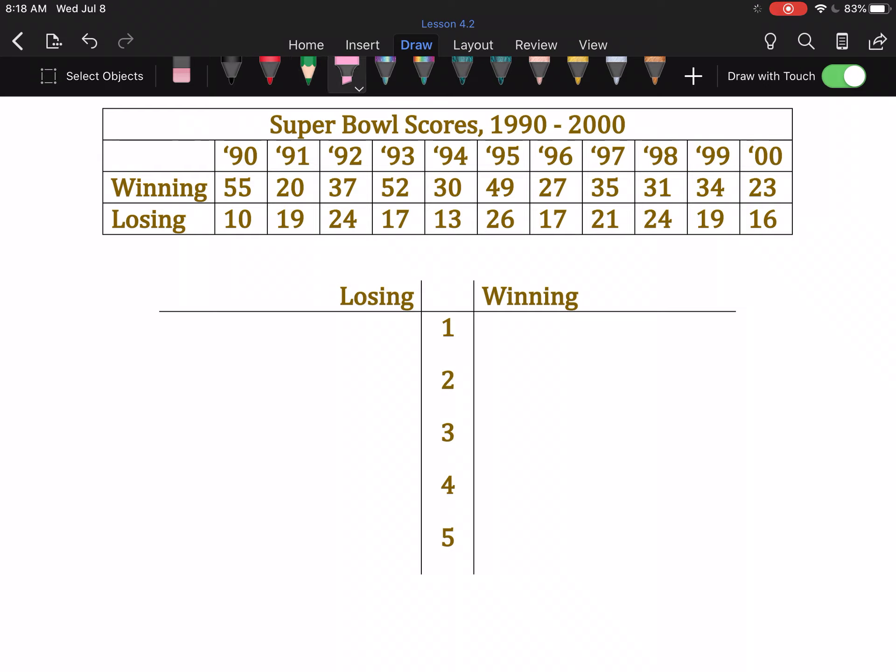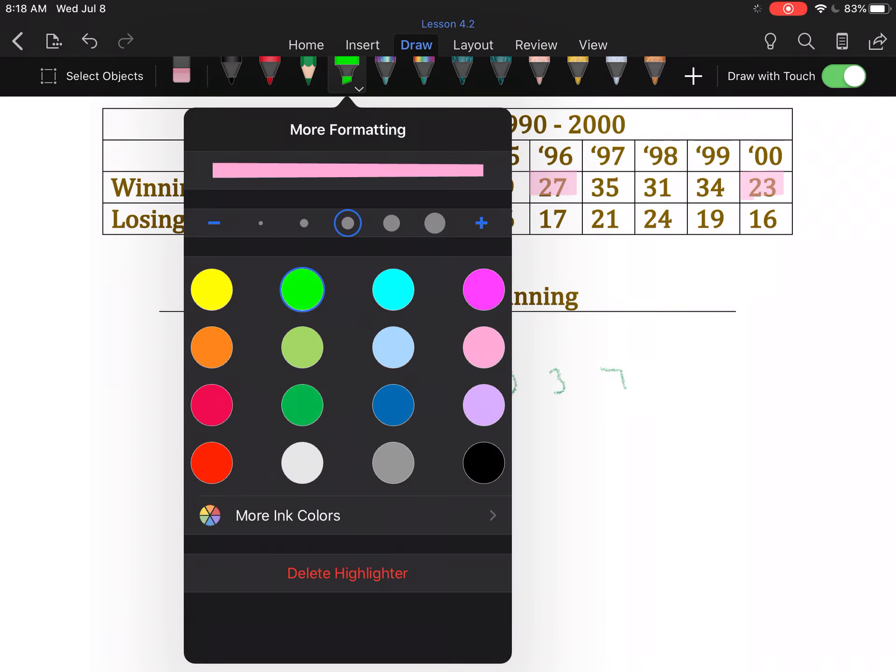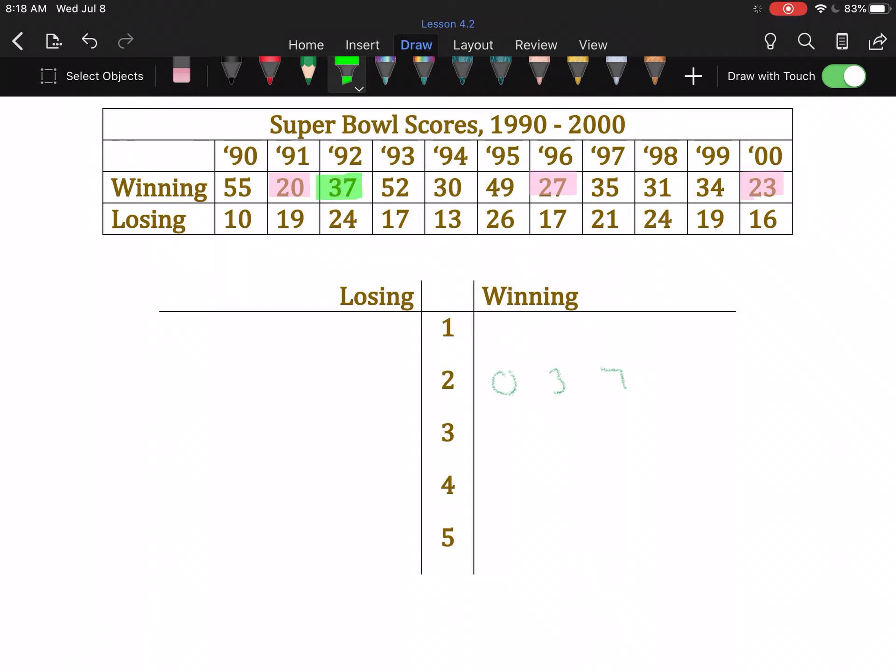For scores in the 20s, we have a 20, a 27, and a 23. So we've got to put those in order. So 20, 23, and 27. For scores in the 30s, we've got ourselves a 37, a 30, a 35, and a 31, and a 34.